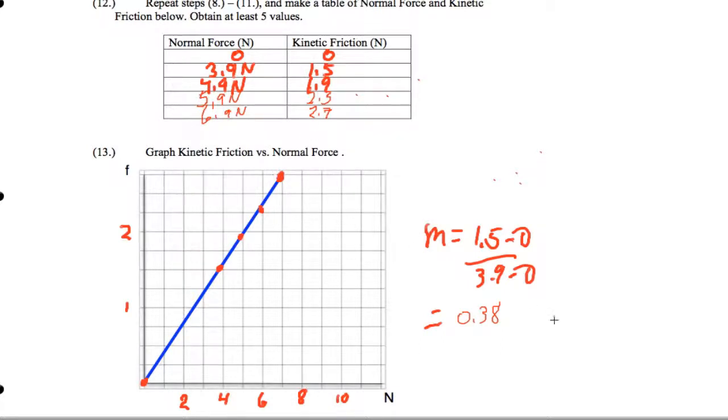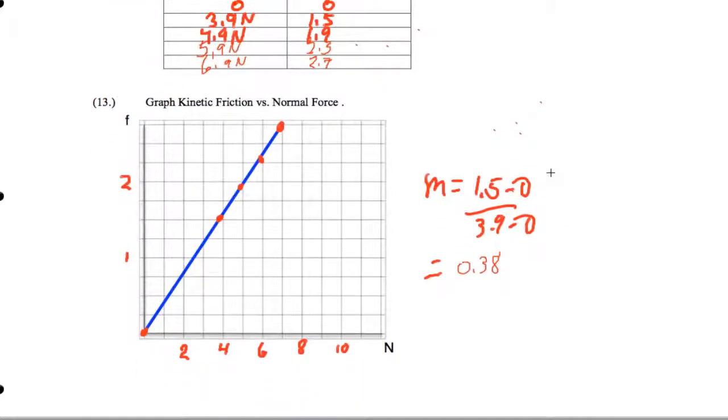You want to plot those points. And I've got a slope of 0.38, and that actually doesn't have any units since it's newtons divided by newtons, so the units cancel.